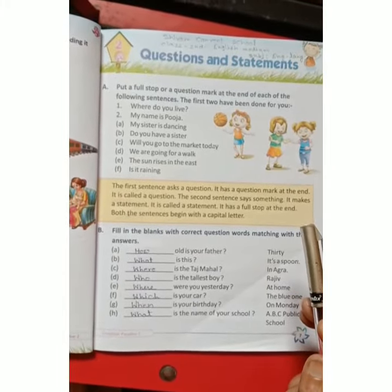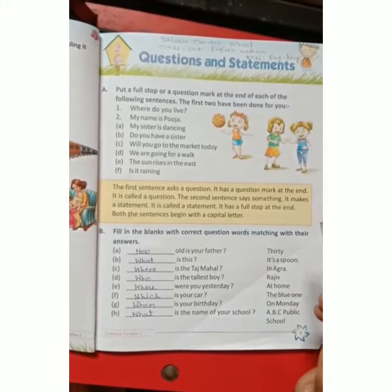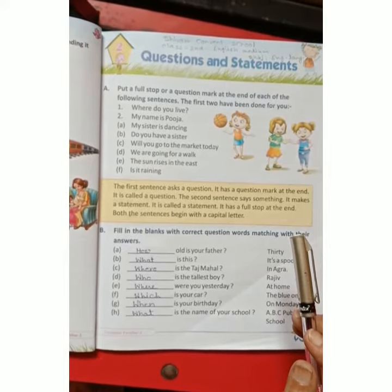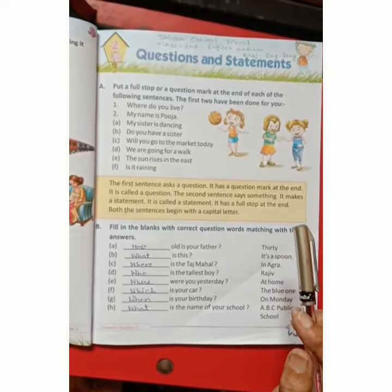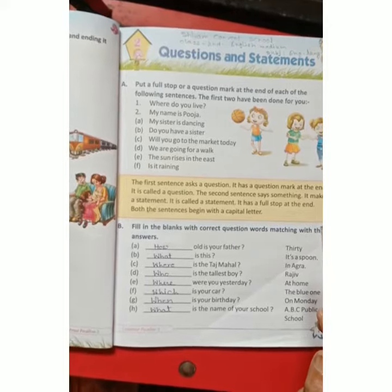Where do you live? There is a question mark. My name is Pooja. This is a simple sentence which is called a statement, with a full stop.